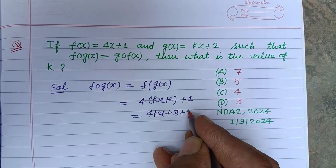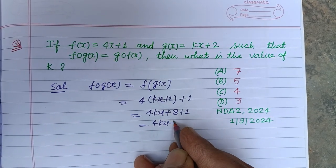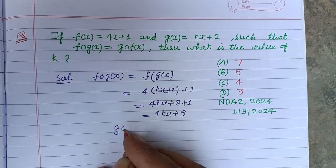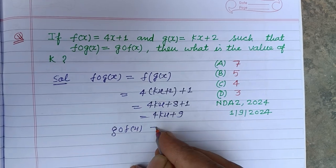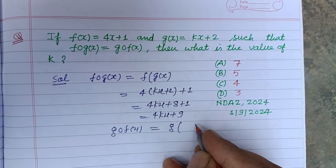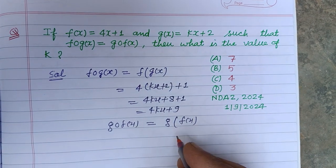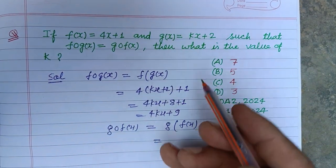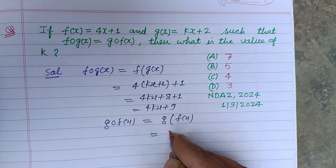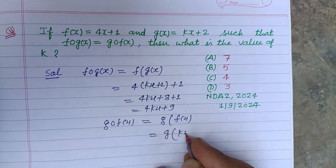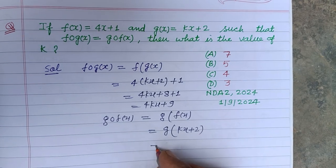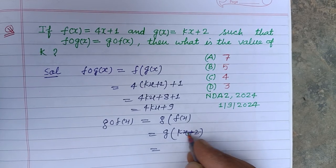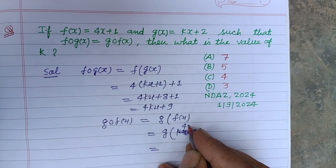Now g∘f(x) equals g of f(x). We put f(x) in place of x in g(x). Since f(x) is 4x plus 1, we have g of 4x plus 1. Now we put 4x plus 1 in place of x.